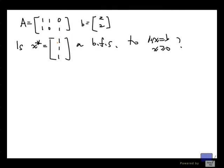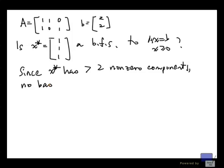And so, there can be at most two non-zero components in x star in whatever is determined by B. So this cannot be. Since x star has greater than two non-zero components, no basis can determine x star as a BFS.